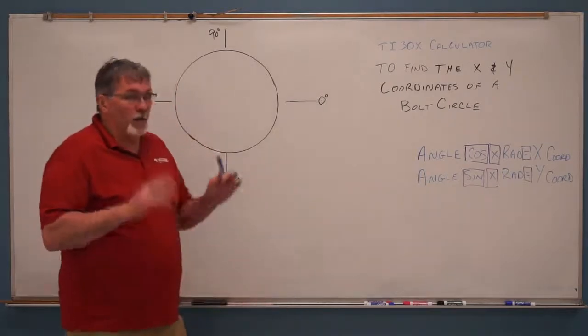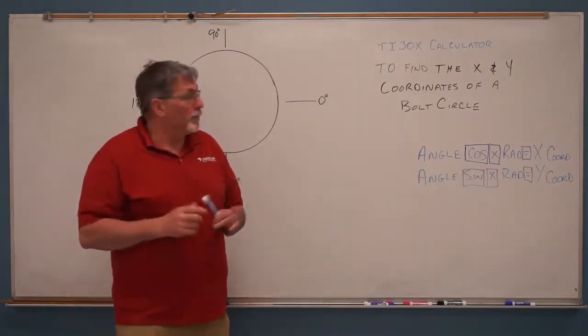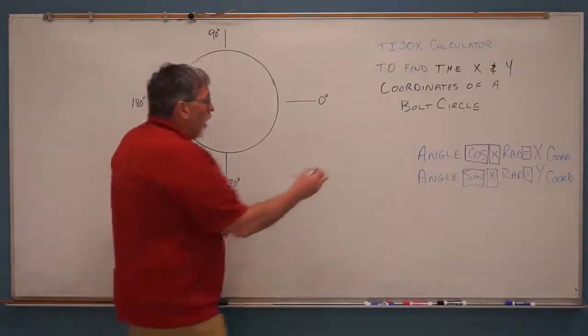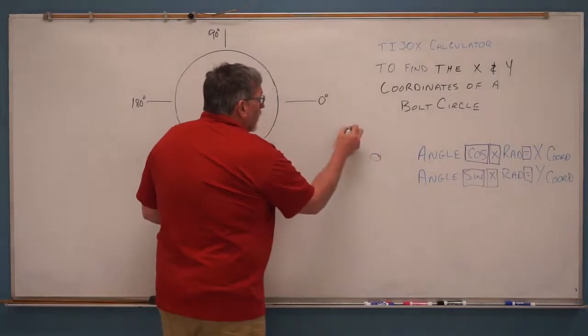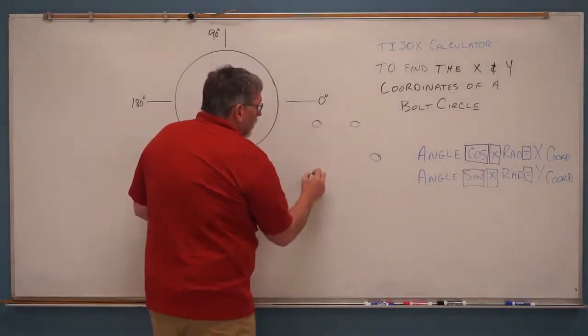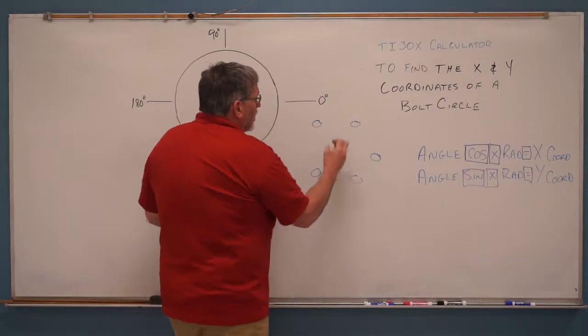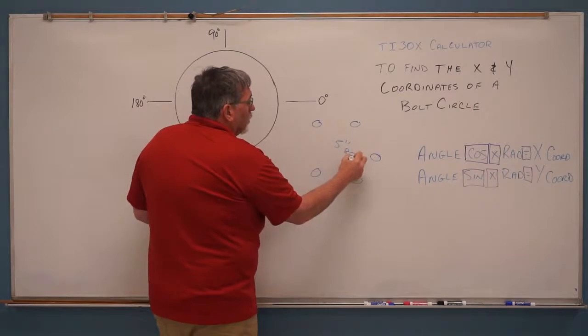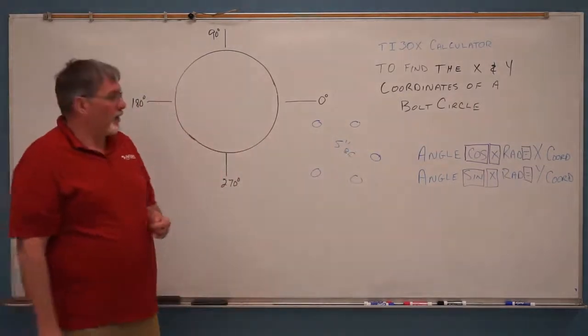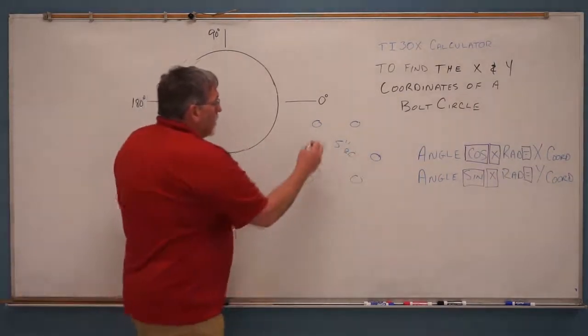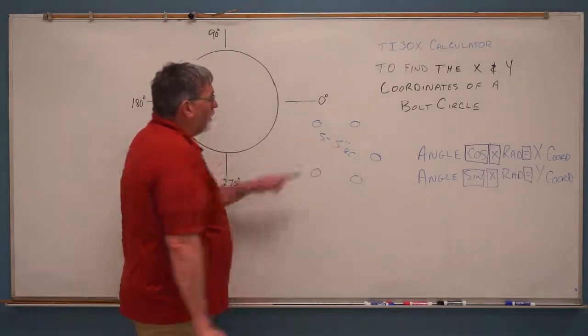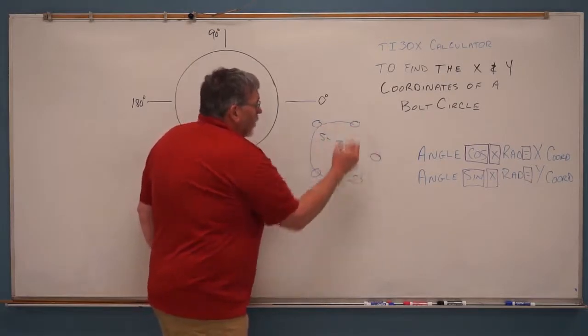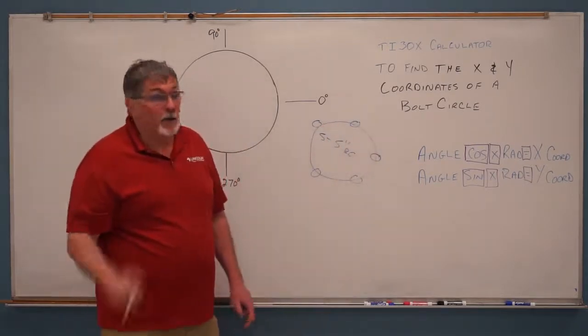So let's talk about that for a second. You may not be familiar with the term bolt circle, but a lot of times on a print you'll find a hole pattern similar to this. And this will be designated as a five inch bolt circle, sometimes just abbreviated BC. So that means you have five holes on a five inch bolt circle. So if you were to draw a circle through all of these holes that would be a five inch diameter circle.